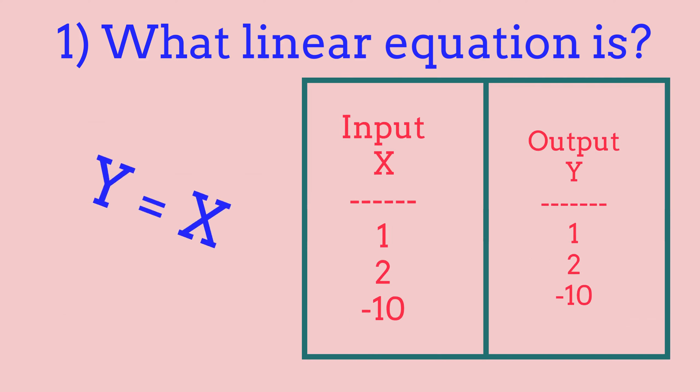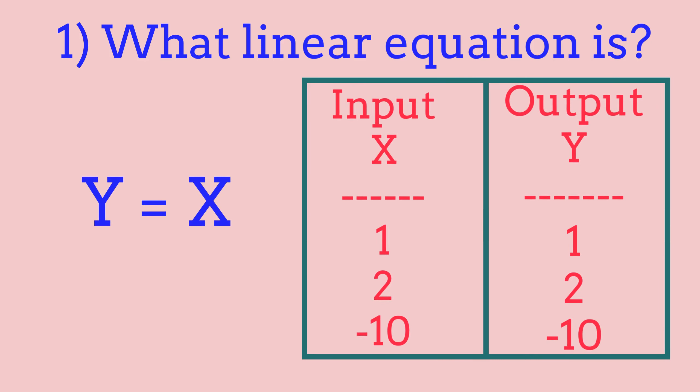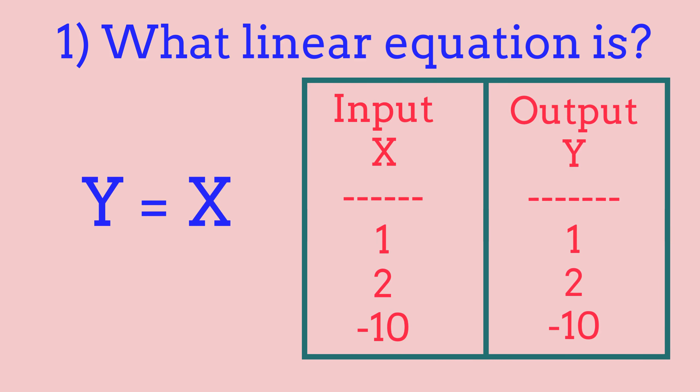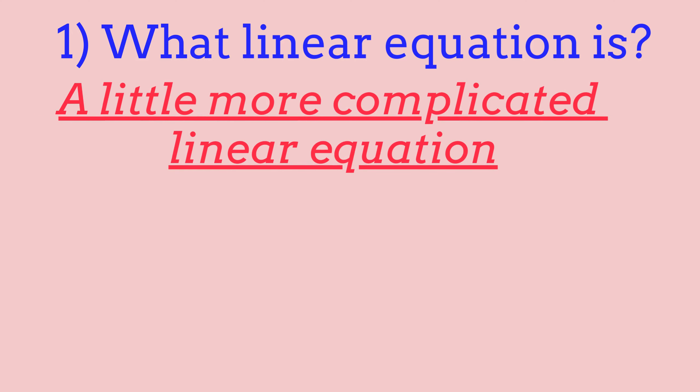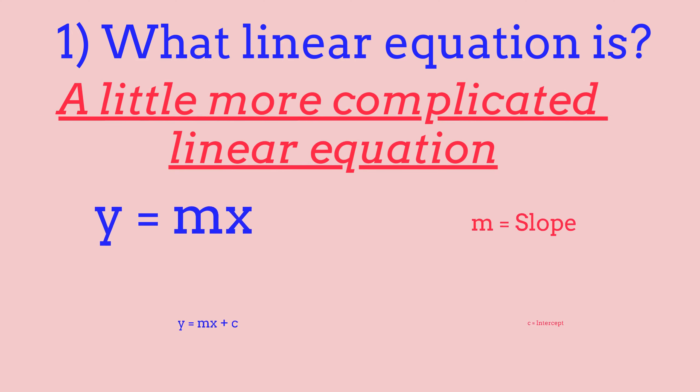If we were to plot the points inside of a table, every single point would be the same because y equals x — so if we had 1 for y, then we'd have 1 for x; if we had negative 10 for y, then we'd have negative 10 for x. Linear equations can get more complicated — we can have a coefficient and a constant, giving us y equals mx or y equals mx plus c, where m and c can be any value.